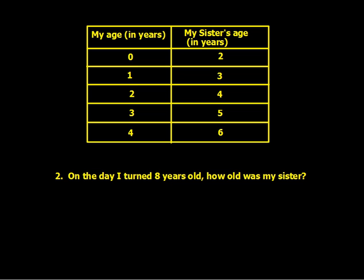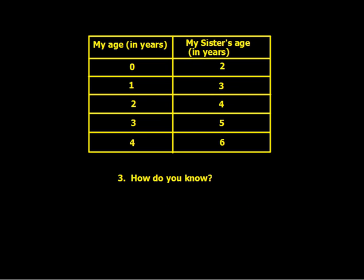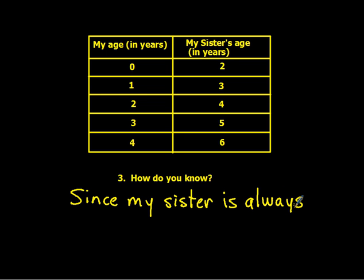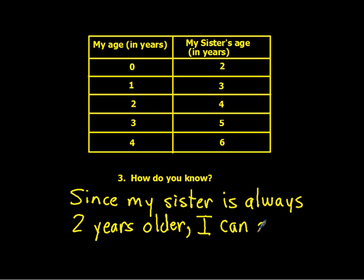On the day that I turned eight years old, how old was my sister? Since my sister is always two years older, I can add eight — my age — plus two years, to equal ten years.